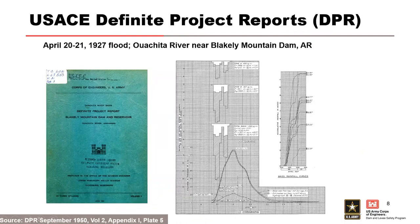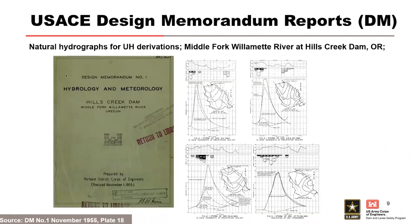This is a USACE definite project report for Blakely Mountain Dam, showing the inflow hydrograph as well as incremental and cumulative precipitation information and a calculated unit hydrograph — a very useful type of information. Here's another one from a USACE design memorandum for Hills Creek Dam, which has hydrographs from multiple events and isohydal maps for each event. Note that most unit hydrograph derivations come from large historic events, and therefore documents often have historic inflow hydrographs, which is what we need for our flow frequency analysis.